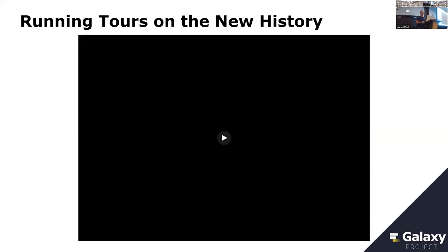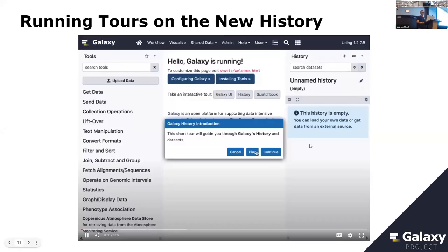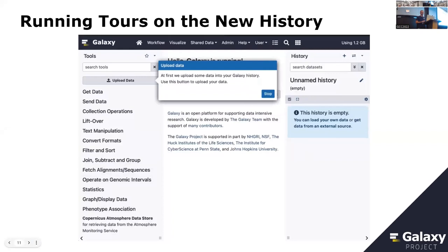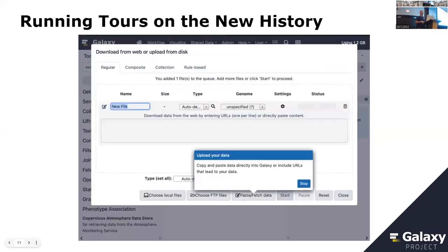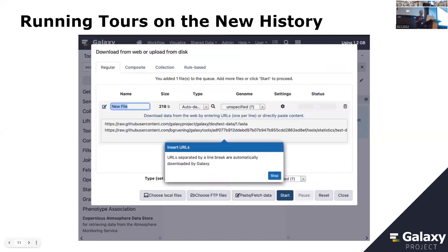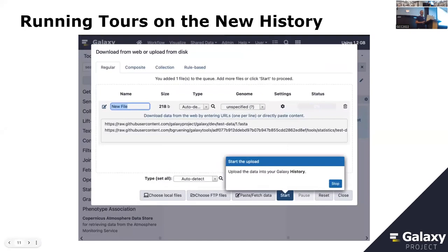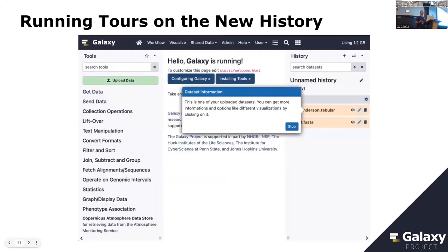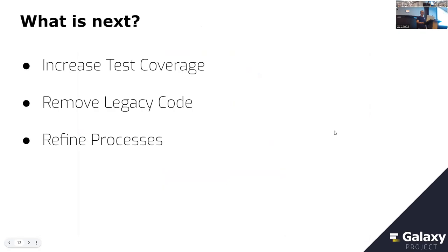We also want to highlight some peripheral developments. We upgraded our tours — they are now entirely Vue-ified, can run on the new history, are very robust, help demonstrate new features, and also have tests because the tours are implemented in a way that our testing framework automatically runs them. What is next: conservatively, since we had huge changes this time, the three priorities are increasing test coverage for the next release, removing legacy code — there's still some since in this transition you can switch between the two histories as a safety plan — and finalizing that process.